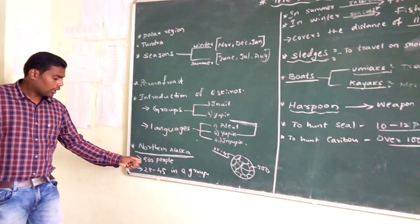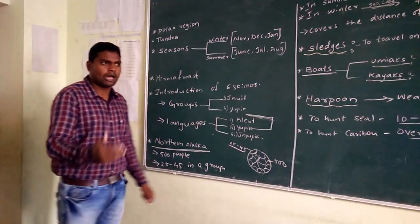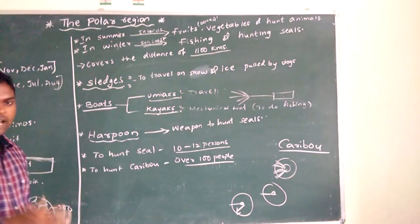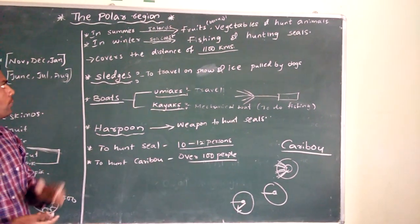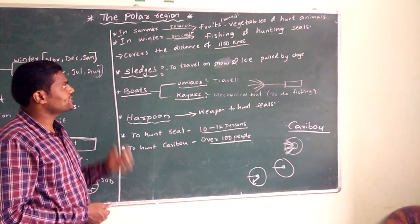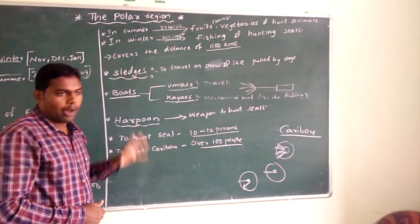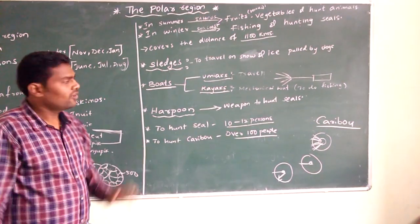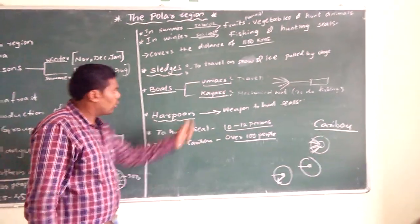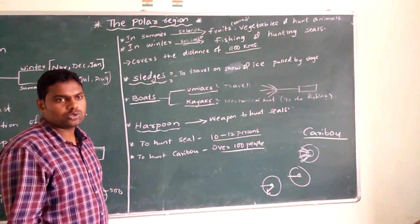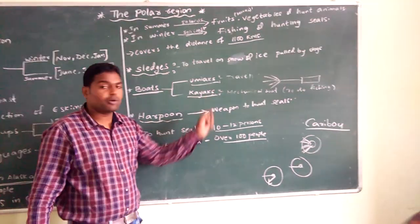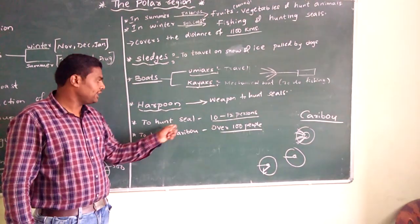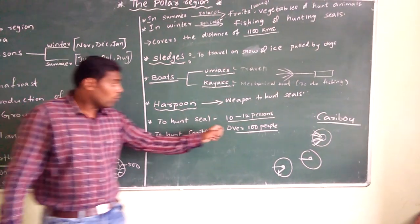Northern Alaska has 500 people living in groups of 25 to 45 persons. In summer, the people move towards the inland to collect fruits, gather berries, collect vegetables, and hunt animals like caribou. In winter, they move towards the seashore to do fishing and hunting seals. They approximately cover 1100 km in a year. They use sledges to travel. Boats: Umayak for travel on water, Kayak for fishing. Harpoon is a special weapon to hunt seals. To hunt a seal — 10 to 12 persons. To hunt a caribou — 100 people.